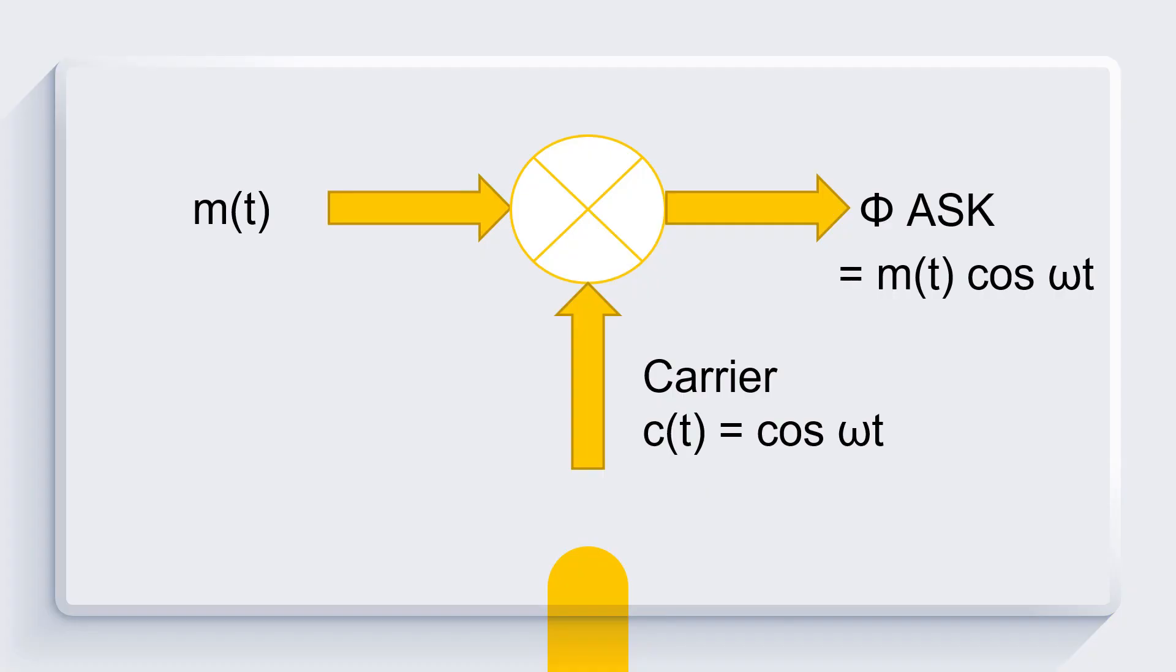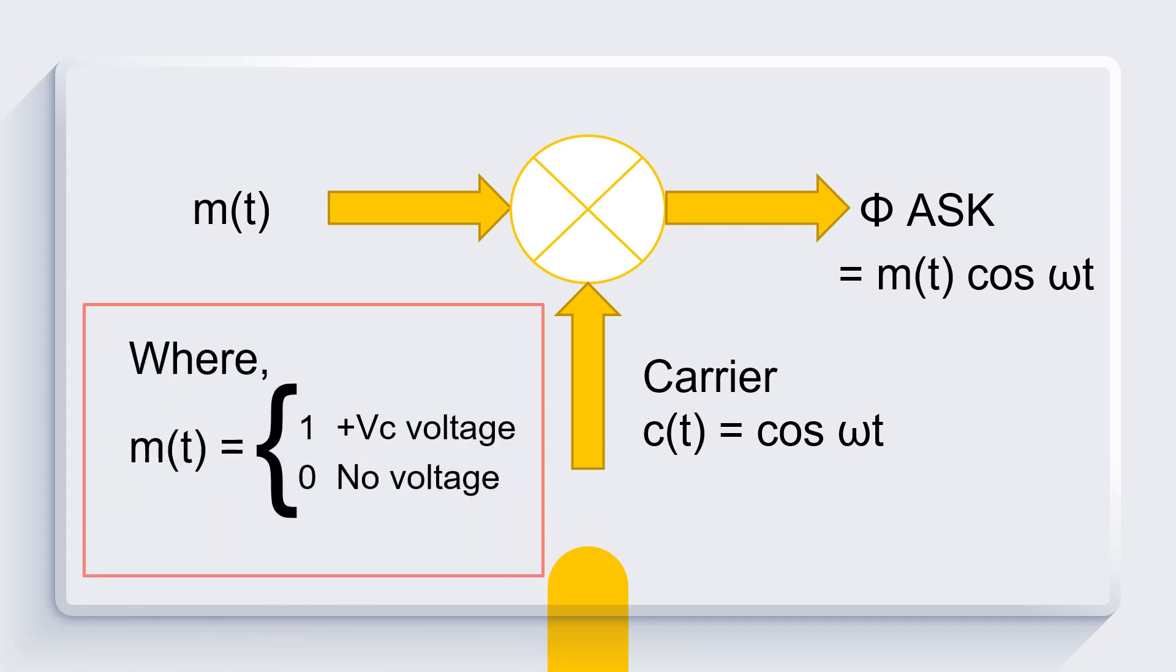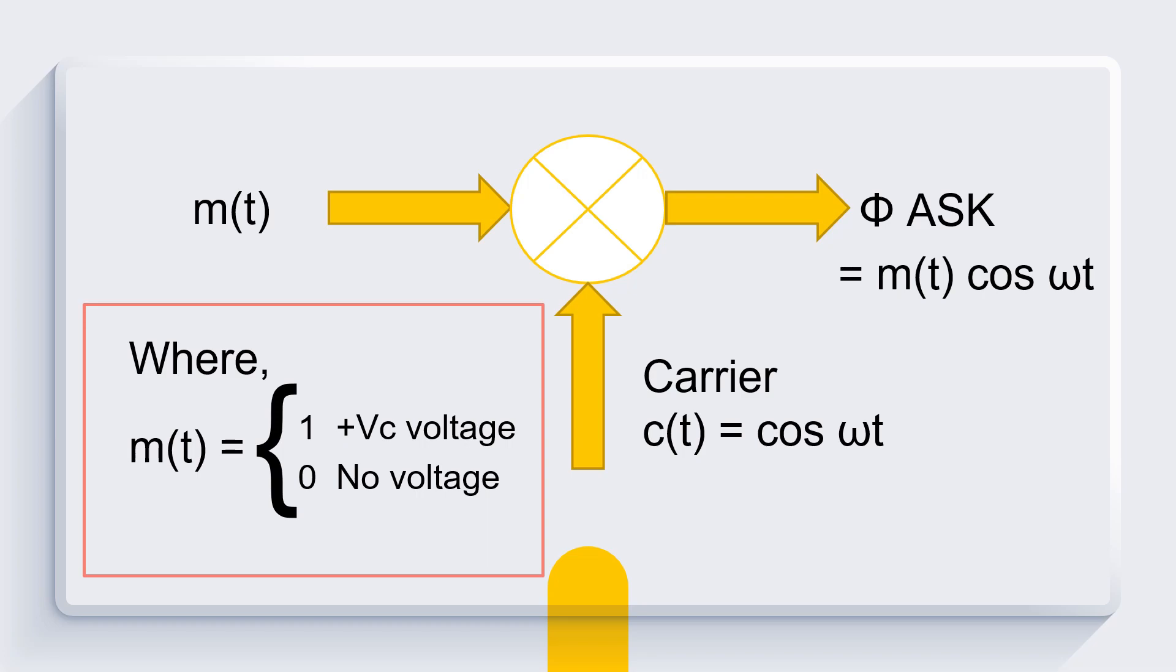We already know that the product of message signal and carrier signal generates the ASK output, where the input signal m(t) comes in terms of binary numbers, ones and zeros. Where one gives us positive voltage and zero for no voltage.